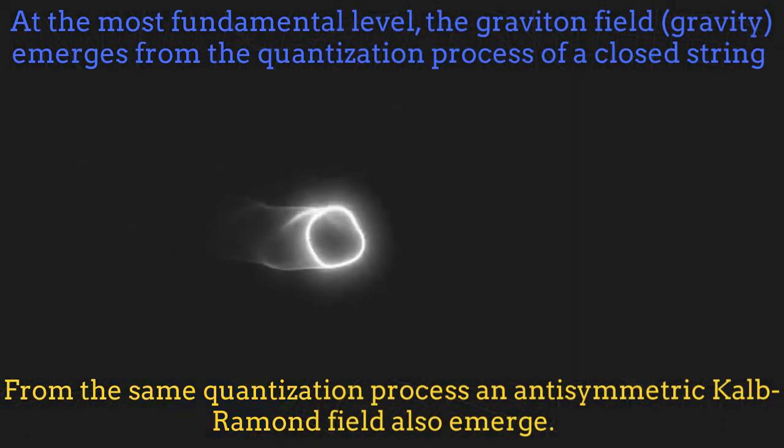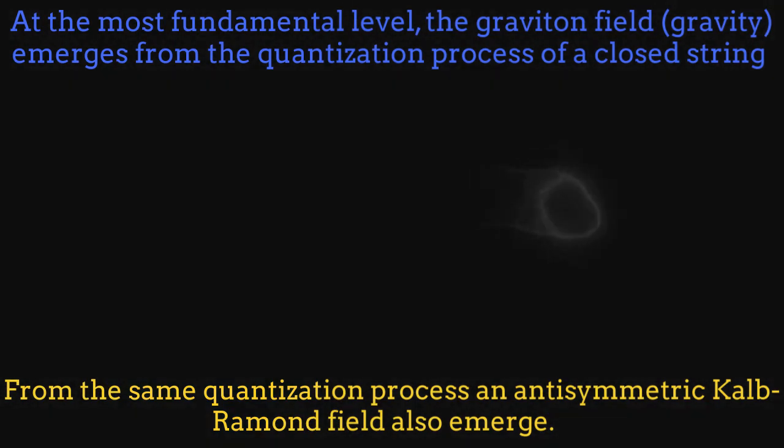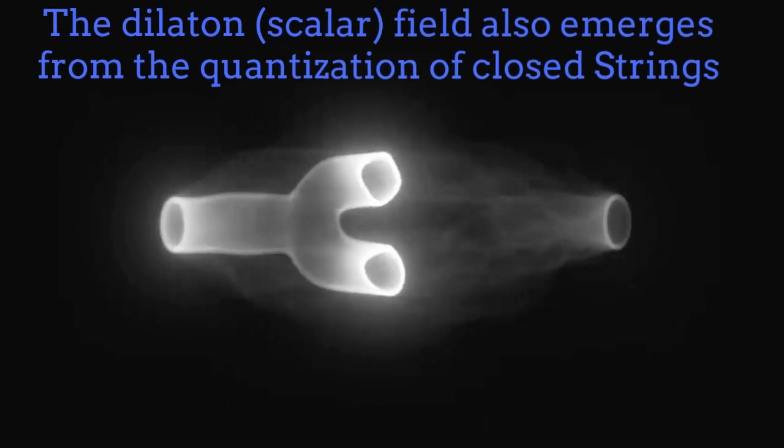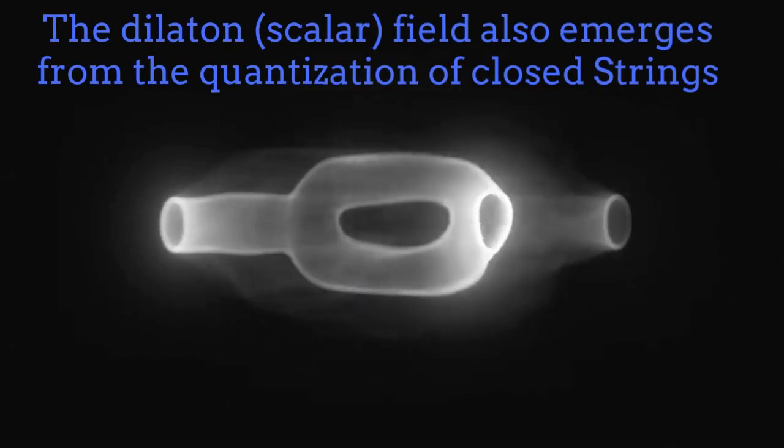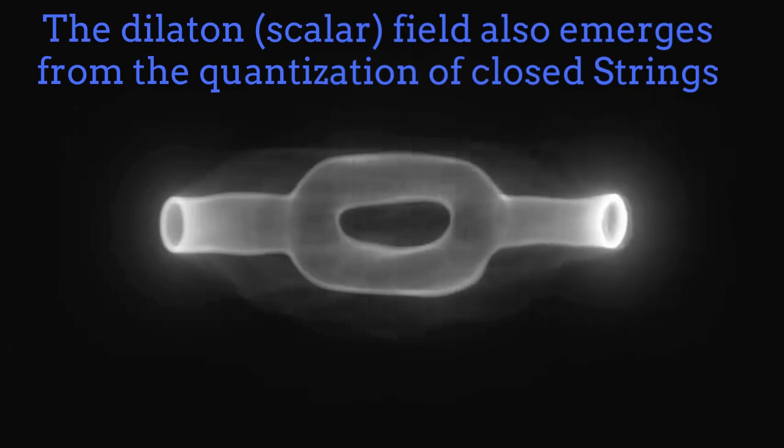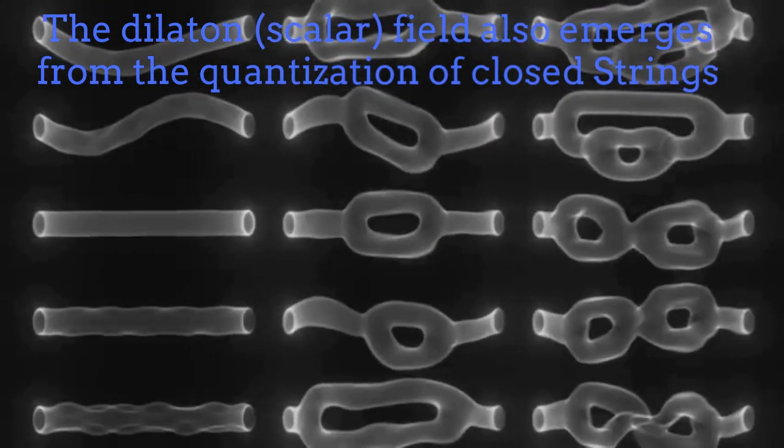In fact, this antisymmetric field corresponds to the Kalb-Ramond field. Another field emerging from the quantization of a closed string is a massless scalar field called the dilaton field. Then we can conclude that in string theory, gravity appears from closed strings as massless graviton fields.